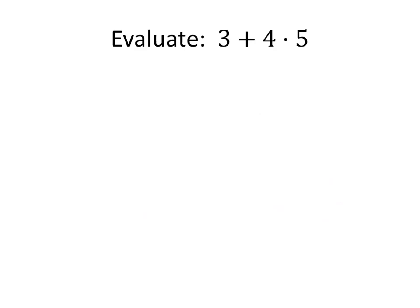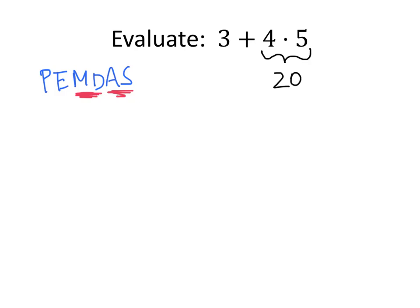In this expression, we have 3 plus 4 times 5. The question is, what do we do first? We know 4 times 5 is 20, and we know 3 plus 4 is 7, but which one happens first? That's where the order of operations comes in — parentheses, exponents, multiplication and division, then addition and subtraction. So multiplication happens before addition, meaning we do 4 times 5 first, which is 20, and then 3 plus 20 is 23.